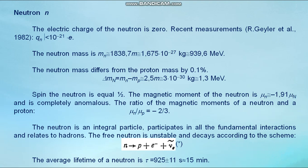Spin of the neutron is equal one half. The magnetic moment of the neutron is μₙ approximately equals minus 1.91 multiplied μₙ, and it's completely anomalous. The ratio of the magnetic moments of neutron and proton equals minus 2/3. The neutron is an integral particle. Participates in all the fundamental interactions and relates to hadrons. The free neutron is unstable and decays according to this scheme. The average lifetime of neutron equals 925 seconds, approximately equals 15 minutes.